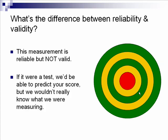Let's take a look at another example. Notice that all of the darts fell in the same place, so this measurement is reliable. But they didn't fall on the bull's eye, which is what we were trying to measure, so this is not a valid test. If this were a test, we'd be able to predict your score, but we wouldn't have a clue what it was that we were measuring.